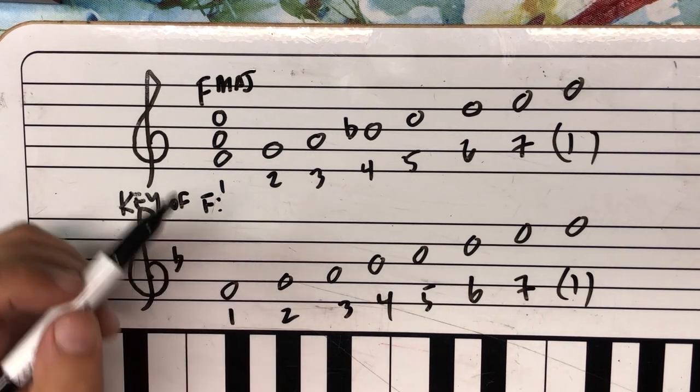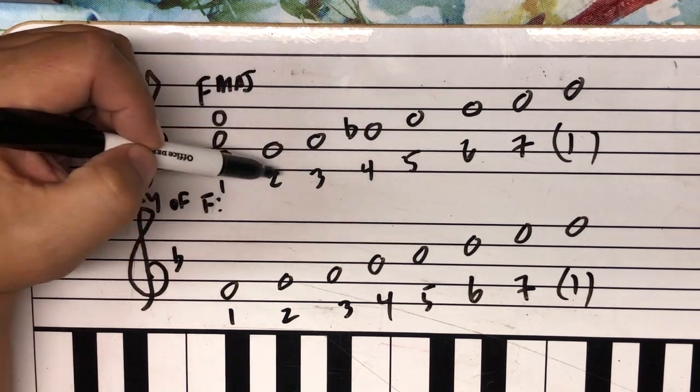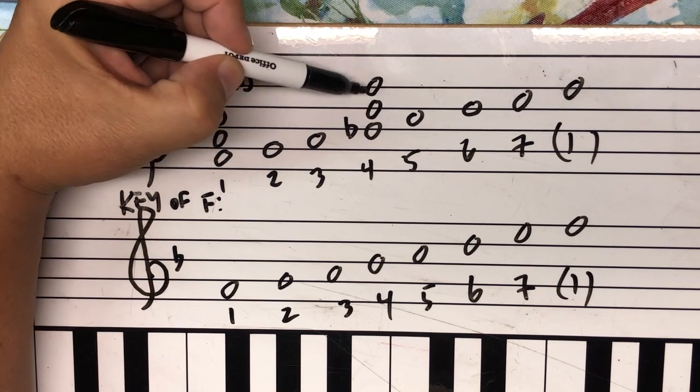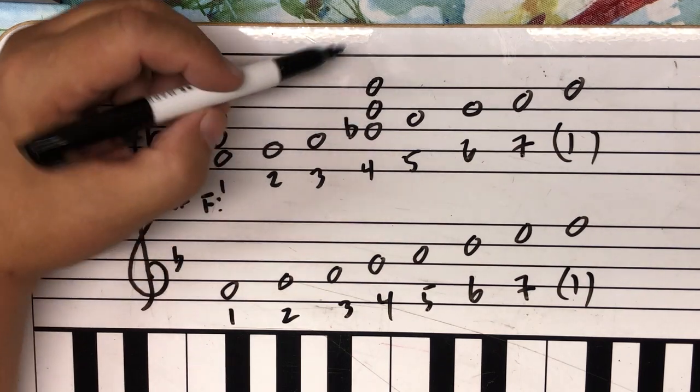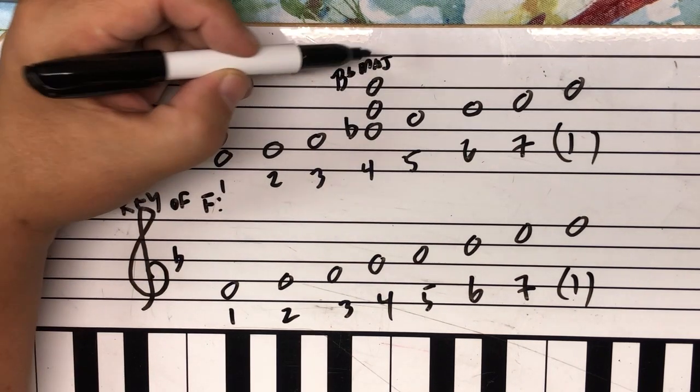Okay. And if we were to build a chord on four, right, on the fourth scale degree, it would be B flat, D, and F right there. Right. And B flat, D, and F is a B flat major triad. Okay.